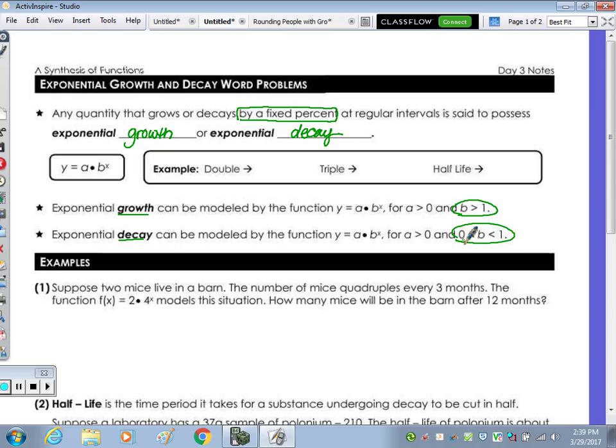If your B value is 2, what's going on in your problem? What do you see in your table if your B is 2? Your Y values are going to be doubling. So when you double, you see doubling with your Y values. That means your B is 2. If you see the Y values tripling, that means your B value is 3. Half-life, your B value is 0.5.